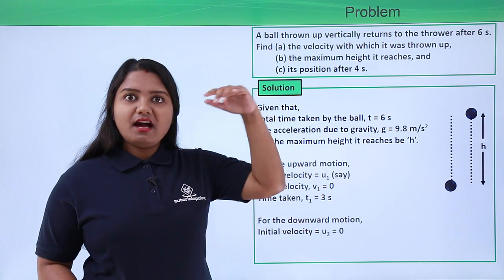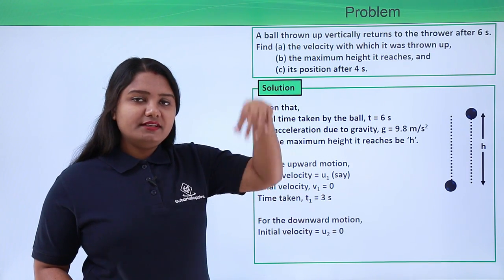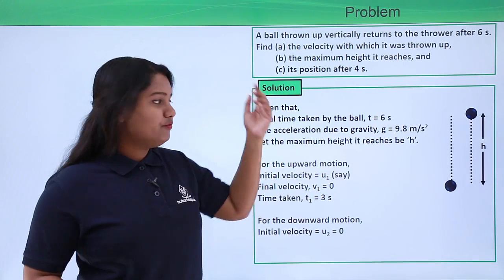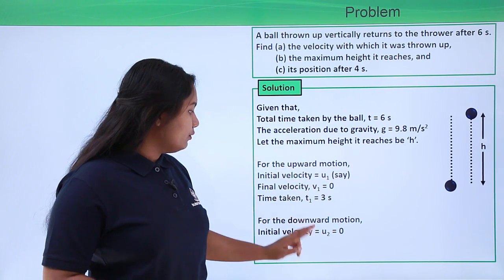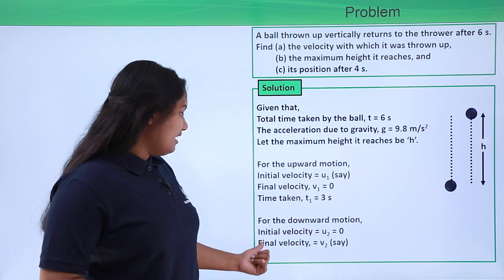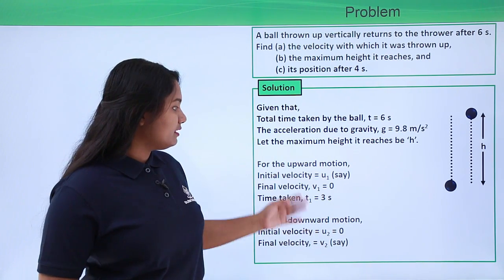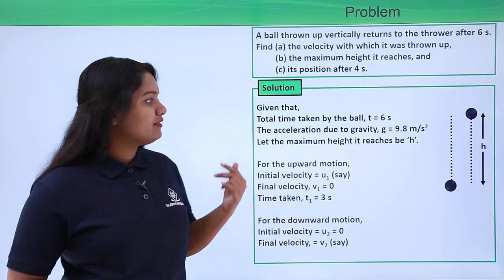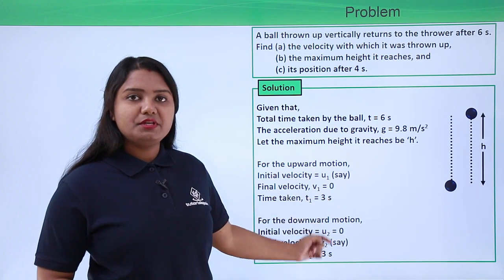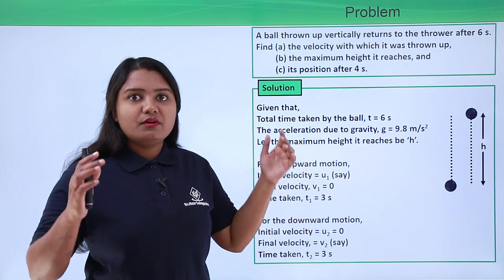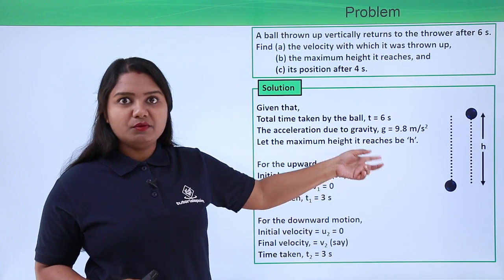For the downward motion, the initial velocity u2 is zero, because the final velocity of the upward motion becomes the initial velocity of the downward motion, and v1 was zero. The final velocity of the downward motion is taken as v2. The time taken t2 equals three seconds, so together t1 plus t2 equals six seconds, which is the total time for the whole motion.